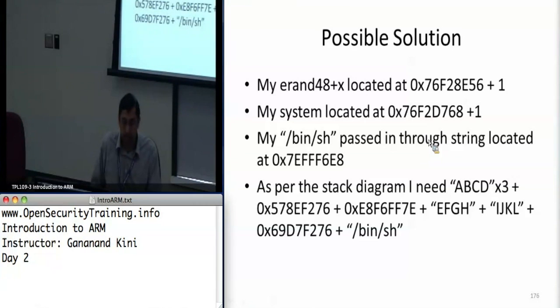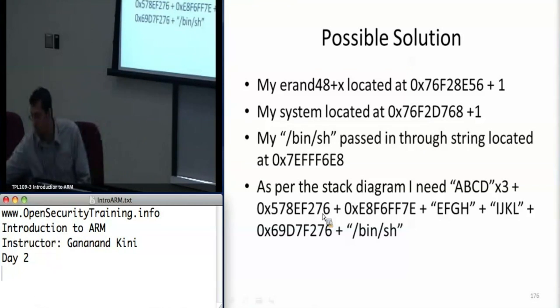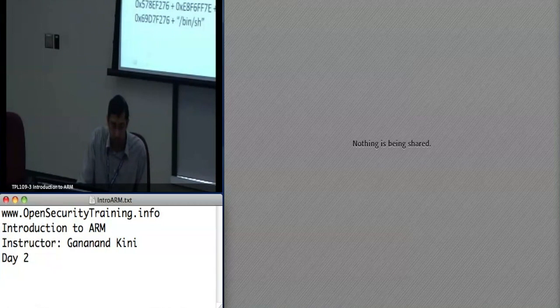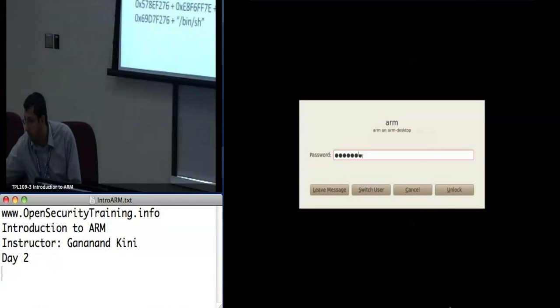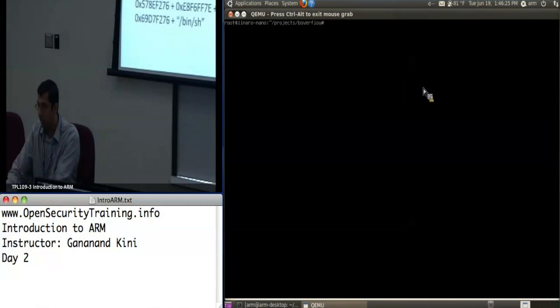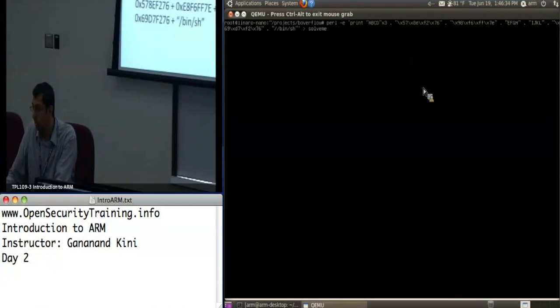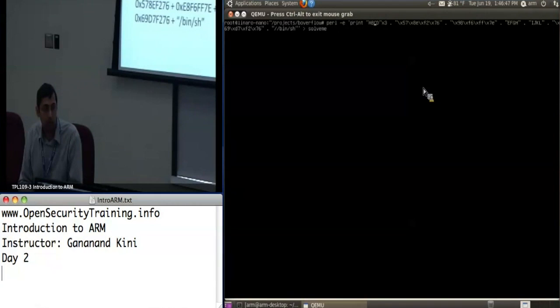So if you reference your stack diagram, I'll actually walk through sort of why that stack diagram is the way it is. So buffer, if you notice in the boverflow.c source file, it's a char array of five bytes. But since it has to do four byte alignment, it'll actually allocate two spaces on the stack. So it becomes eight. And so you get these essentially two four byte spaces on the stack for buffer.